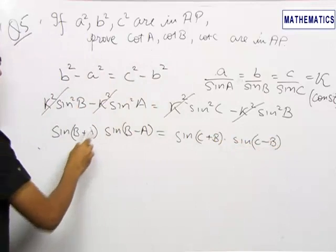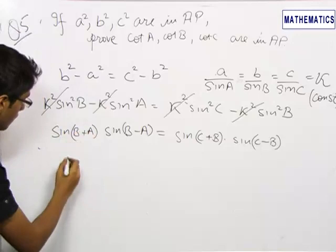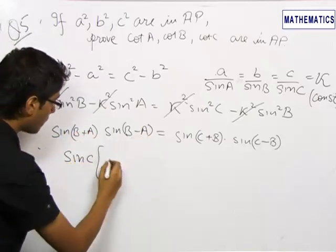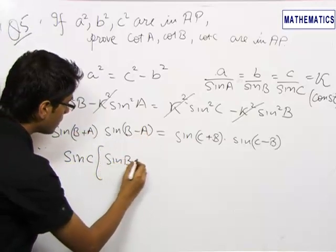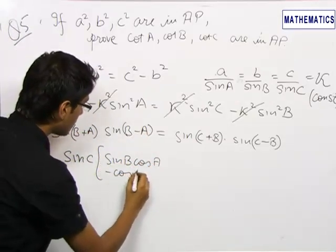Now we know that A plus B plus C equals pi. So A plus B can be written as pi minus C, sin of pi minus C will become sin C. And this can be opened to get sin B cos A minus cos B sin A.